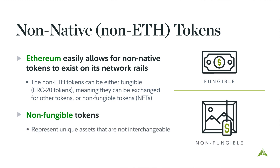Fungible tokens, also known as ERC-20 tokens, are often used in the funding and development of decentralized applications on the Ethereum network. Non-fungible tokens, an emerging trend in digital assets, represent unique assets that are not interchangeable and for which true ownership is represented on the blockchain. These tokens represent some of the biggest use cases for the Ethereum network, and consequently, the Ether token.